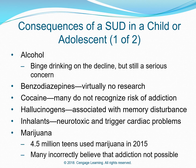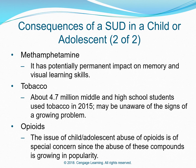Consequences of SUD in a child or adolescent: Alcohol — binge drinking is on the decline but still a serious concern. Benzodiazepines — virtually no research in adolescents. Cocaine — many do not recognize the risk of addiction. Hallucinogens — associated with memory disturbance. Inhalants — neurotoxic and trigger cardiac problems. Marijuana — 4.5 million teens used marijuana in 2015; many incorrectly believe that addiction is not possible. Methamphetamine — has potentially permanent impact on memory and visual learning skills. Tobacco — about 4.7 million middle and high school students used tobacco in 2015; many may be unaware of signs of a growing problem. Opioids — the issue of child and adolescent abuse of opioids is a special concern since abuse of these compounds is growing in popularity.